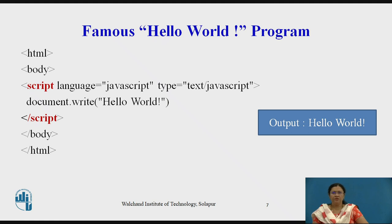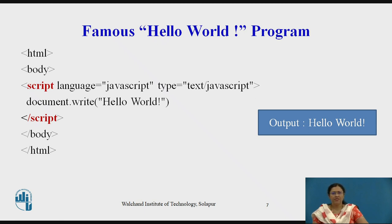JavaScript can be implemented using JavaScript statements placed within the start and end script HTML tags in the web page. The script tag is an extension to HTML that can enclose any number of JavaScript statements. You can place the script tags anywhere within your web page, but it is normally recommended to keep it within the head tag or within the body tag.